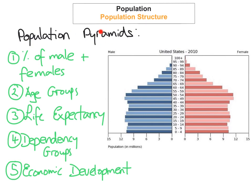The last thing population pyramids can tell us is economic development, shown by how many births and deaths there are. If there's a really high birth rate, we might say it's a developing country. If life expectancy is not that high, that also suggests a developing country. If it's a really well-developed country, you usually see a low birth rate and a low death rate. I'll talk more about this with some other population structures in a few minutes.